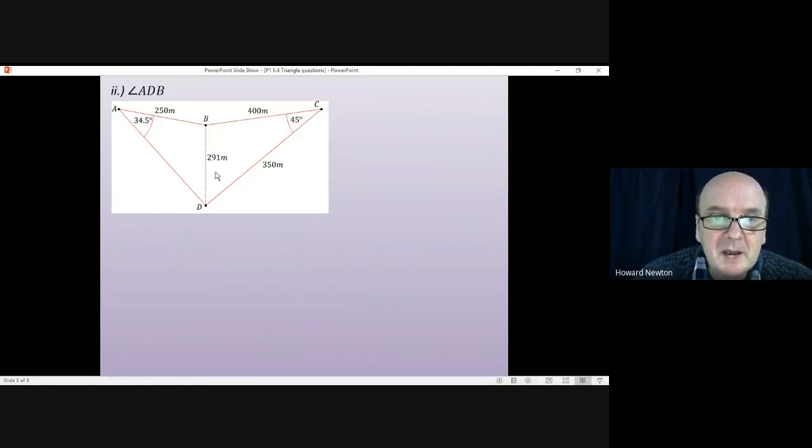Okay, so we can now write in BD on the diagram, it is 291. We're asked to find angle ADB, so the angle from A down to D up to B. We don't have a right angle so we're not using standard trig. However, we do know one angle and the opposite side.